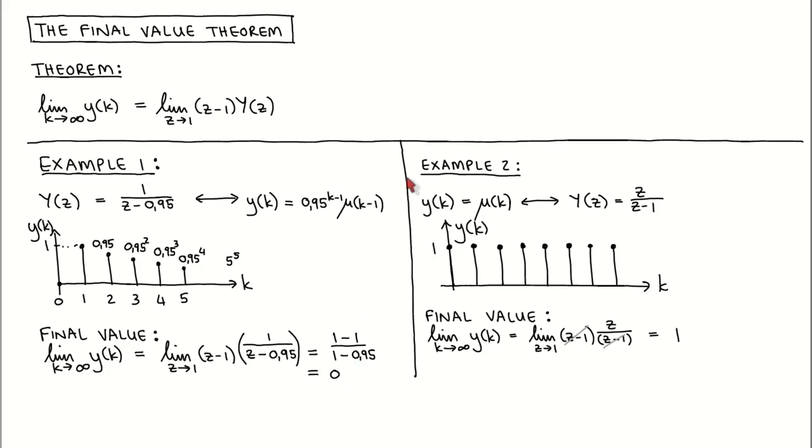For the second example, we calculate the steady state value of a unit step. We know that the steady state value is 1, and we again check that we can get the same answer using the final value theorem.